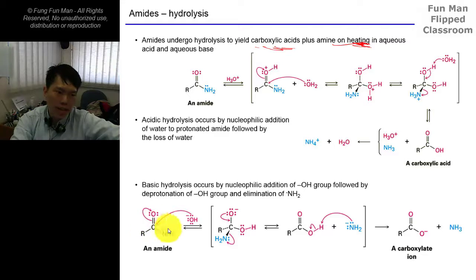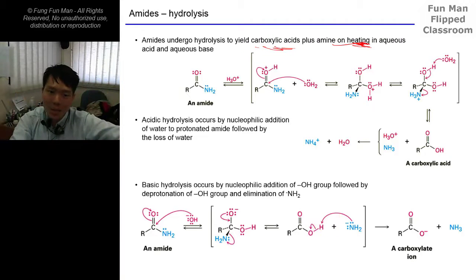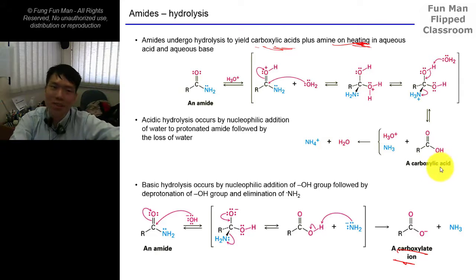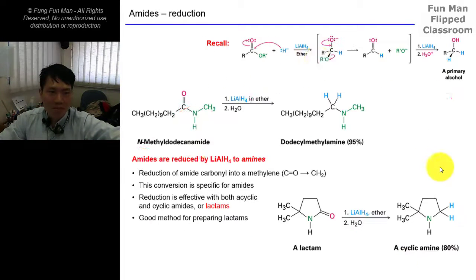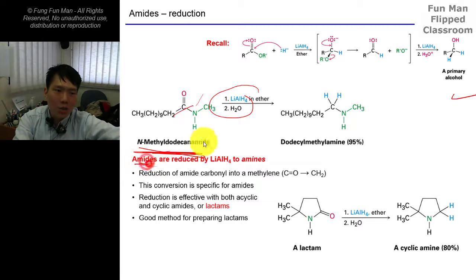For basic hydrolysis of amides, the nucleophile is the hydroxide, which is very strong. It goes in, attacks, and then kicks out the amide ion. But we know the amide is also a very good base, so the amide picks up the H from the carboxylic acid. That's why you get carboxylate, not the free acid, unlike in ester hydrolysis.